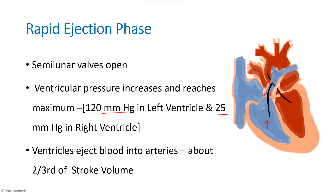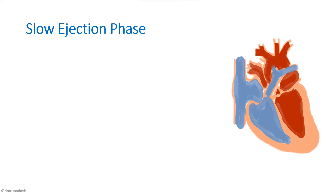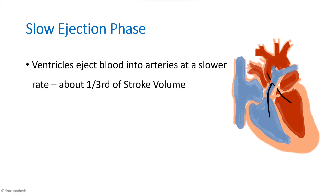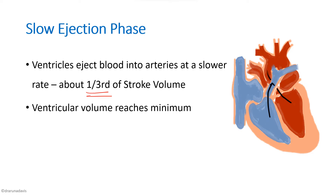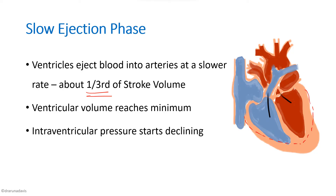This is followed by the slow ejection phase. As the pressure gradient decreases, the ventricles eject blood at a much slower rate, and the remaining one-third of stroke volume is pumped out. The ventricular volume reaches its minimum since most blood has been ejected, and intraventricular pressure begins to decline.